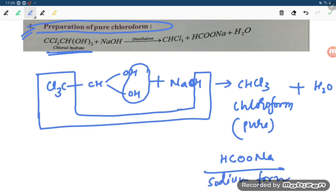So dear student, you can prepare pure chloroform from chloral hydrate by treating with NaOH and distillation you have to do. Distillation, so slowly you are heating, and then you will be able to get the chloroform. Thank you so much for watching.